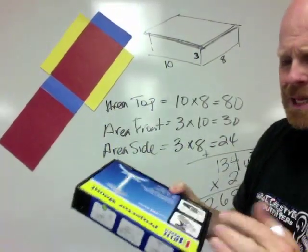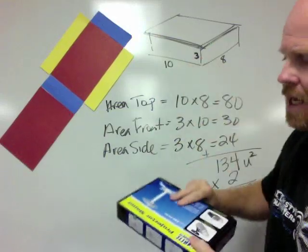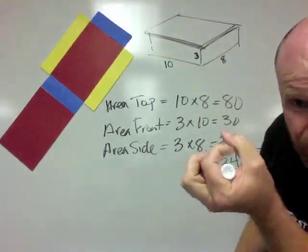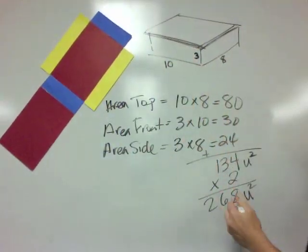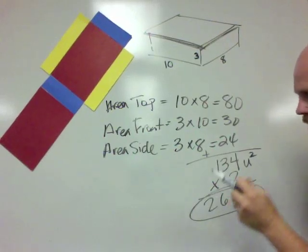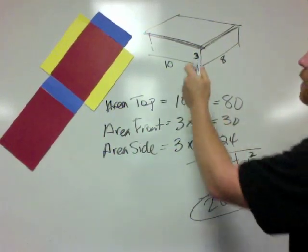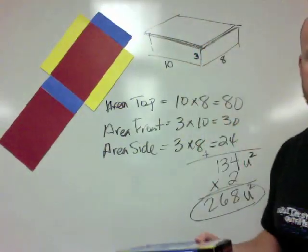Now what does that mean? That means if we were to take squares, little square units, and completely cover this rectangular prism, we would need 268 little squares in order to cover this rectangular prism.